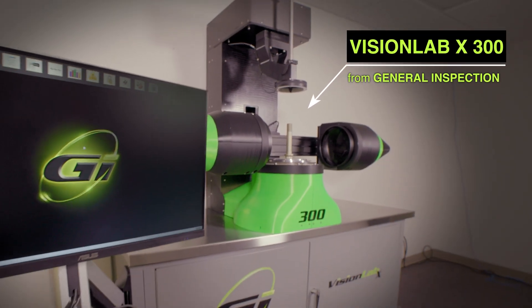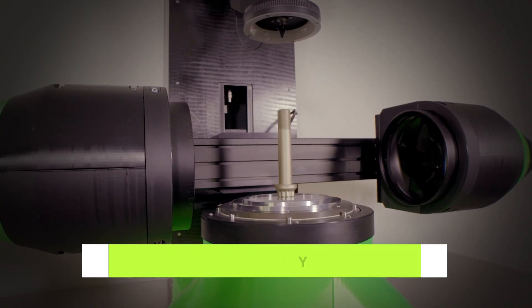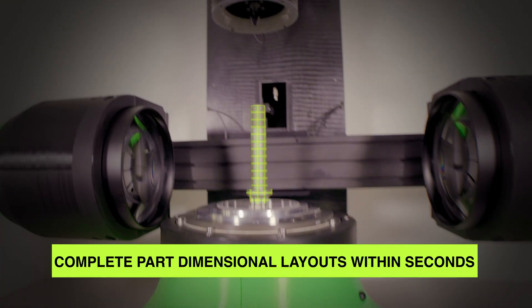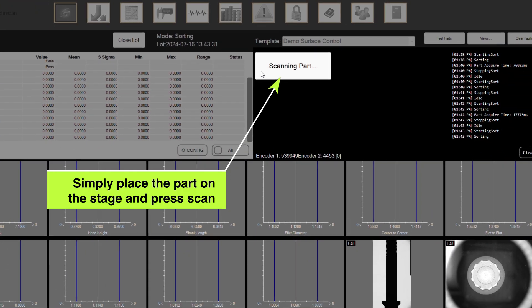VisionLab X300 from General Inspection is a patented 3D gauging system that provides complete part-dimensional layouts within seconds. Simply place the part on the stage and press scan.